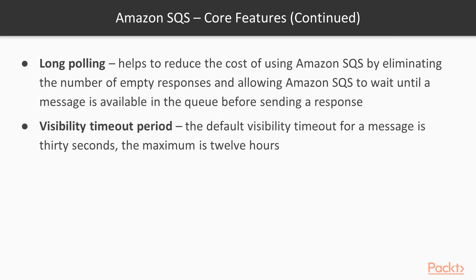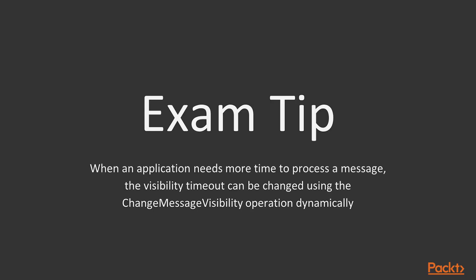The visibility timeout period is the time from when a message is received by an application component until it is processed and deleted from the queue. During this period the message is in a locked state — invisible to the rest of the application so no two components try to process the same message. If a component fails to process the message, the visibility timeout expires and another component can receive and process it. The default visibility timeout is 30 seconds and the maximum is 12 hours. Exam tip: when an application needs more time to process a message, the visibility timeout can be changed dynamically using the ChangeMessageVisibility operation.